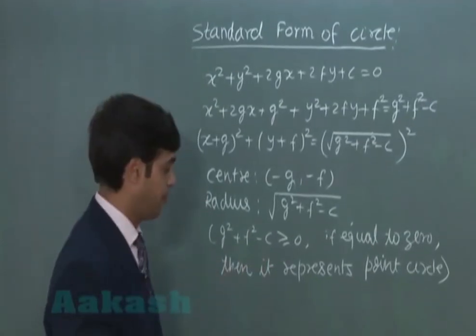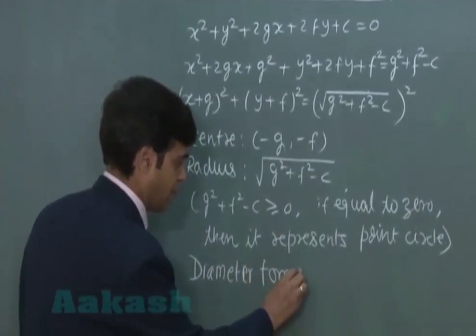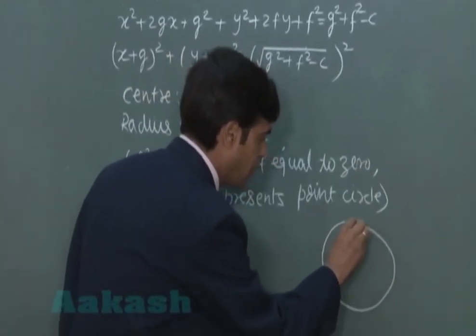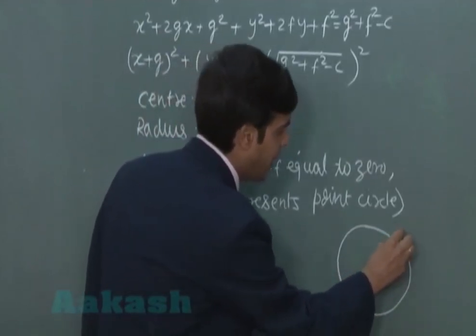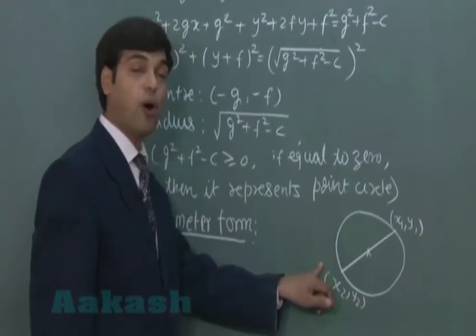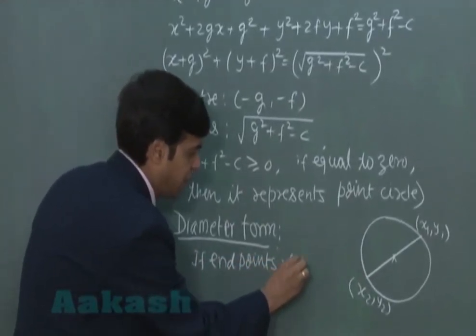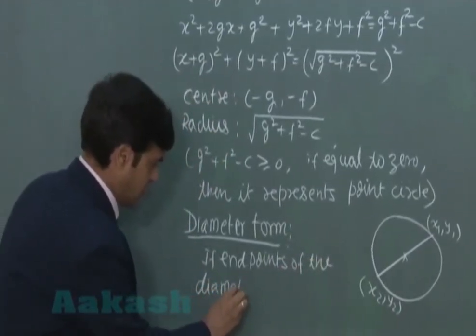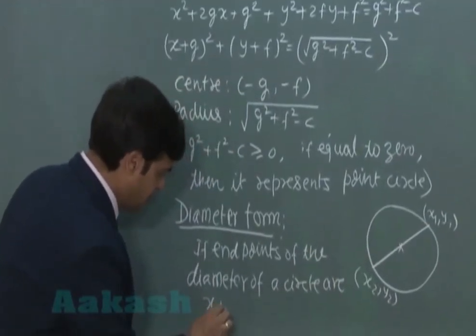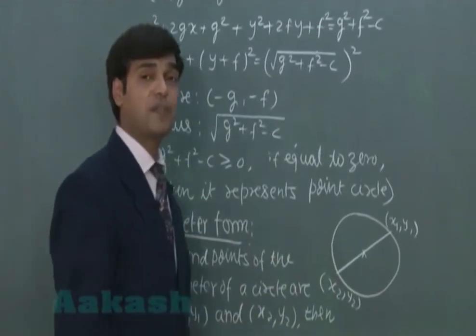Let us consider the next form — the diameter form of the circle. Let's say a circle where the end points of the diameter are known as x1, y1 and x2, y2. If the end points of the diameter of a circle are x1, y1 and x2, y2, then the equation of the circle is given by the following.